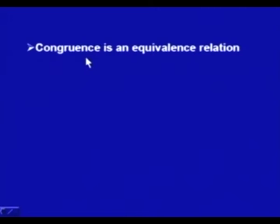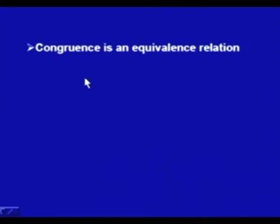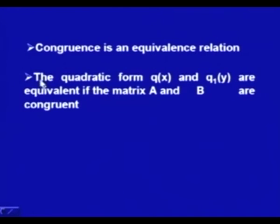We further prove that congruence is an equivalence relation: A is congruent to A (reflexive); if A is congruent to B, then B is congruent to A (symmetric); and if A is congruent to B and B is congruent to C, then A is congruent to C (transitive). The quadratic forms Q(x) and Q₁(y) are equivalent if the matrices A and B are congruent.